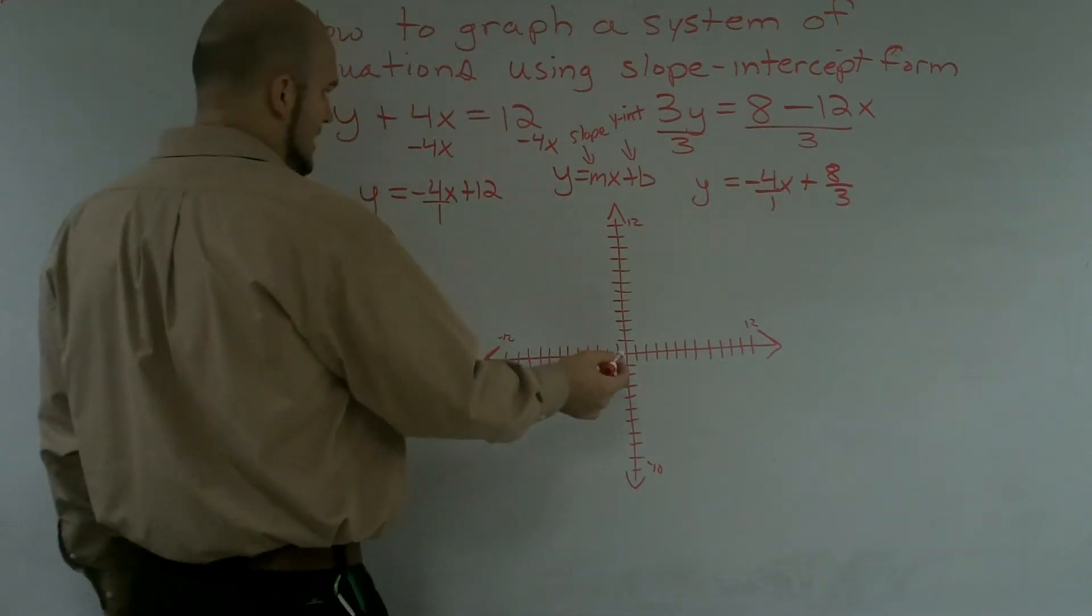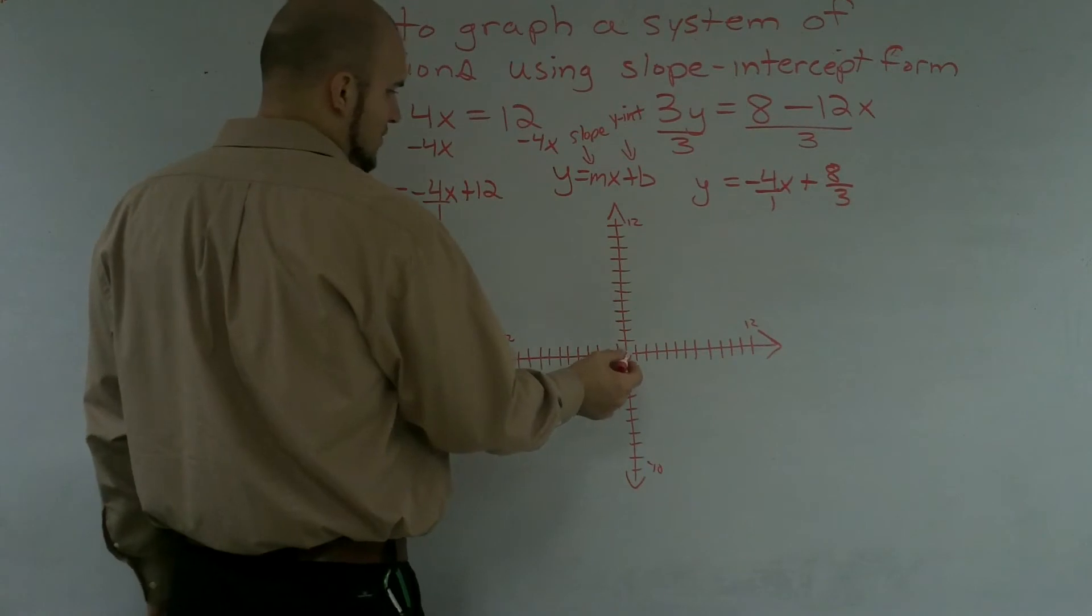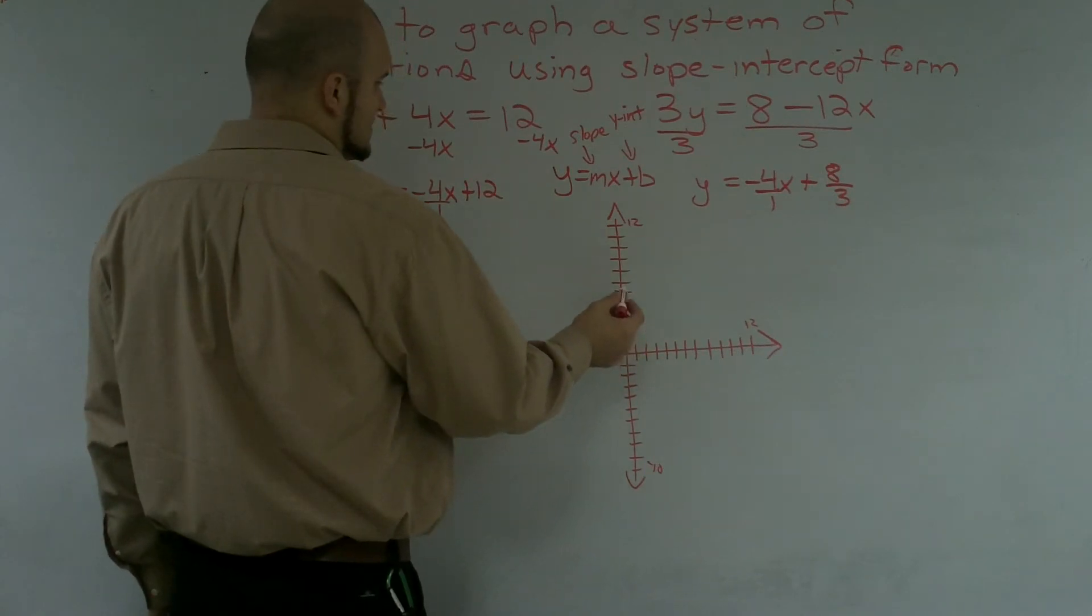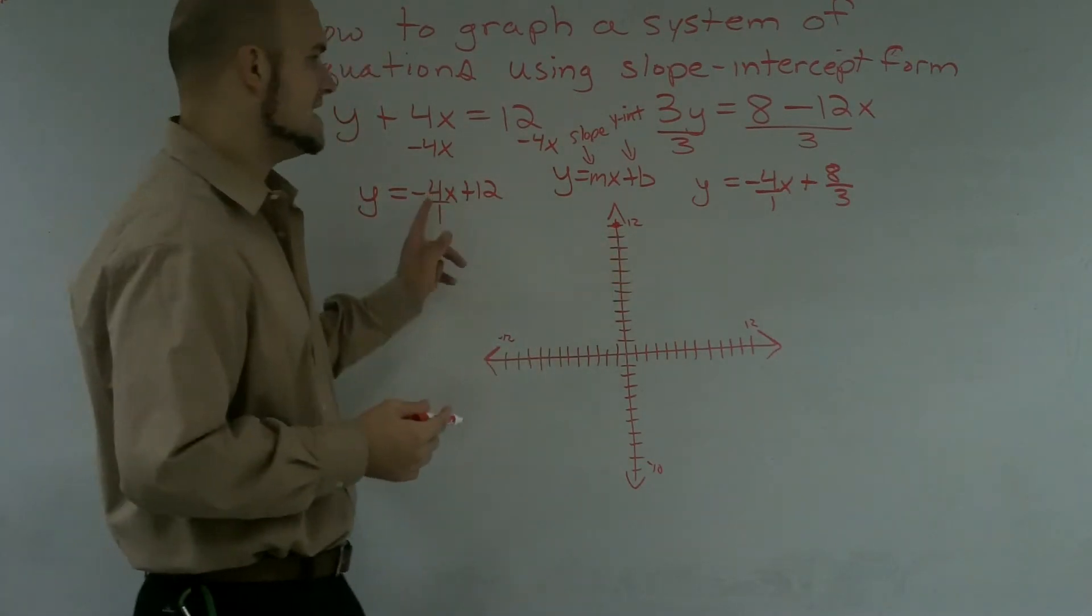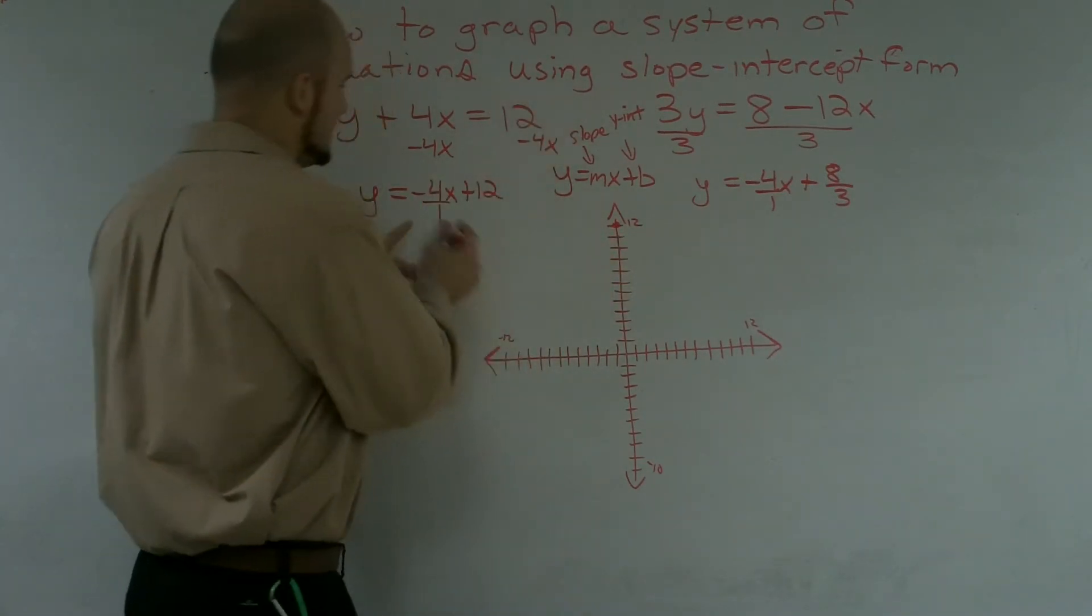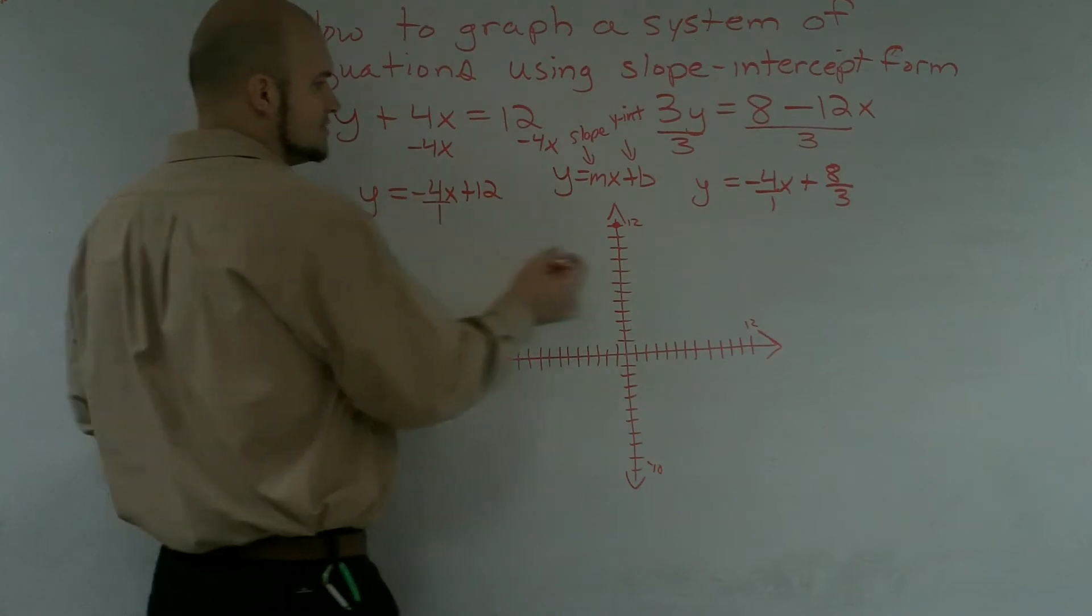So to graph this, I'll go up to my y-intercept, which is 12. So I go up to 12, counting up to that point. And I kind of run out of space on my graph. So I can't go up 1 over 1, but I can go down 4 to the right 1.